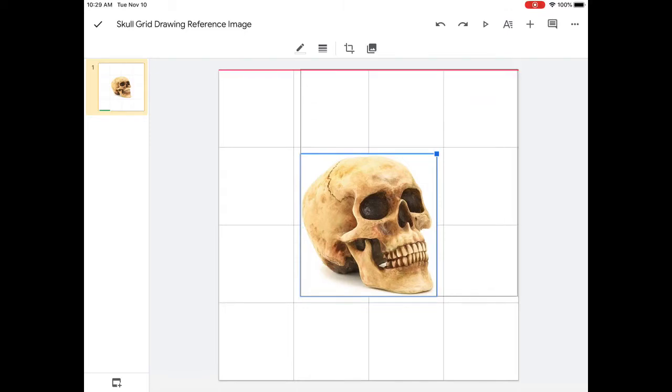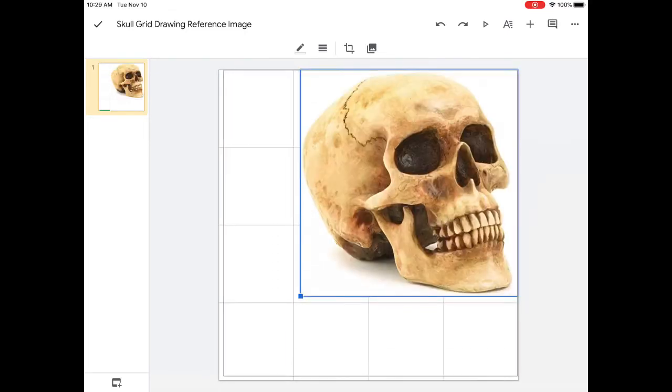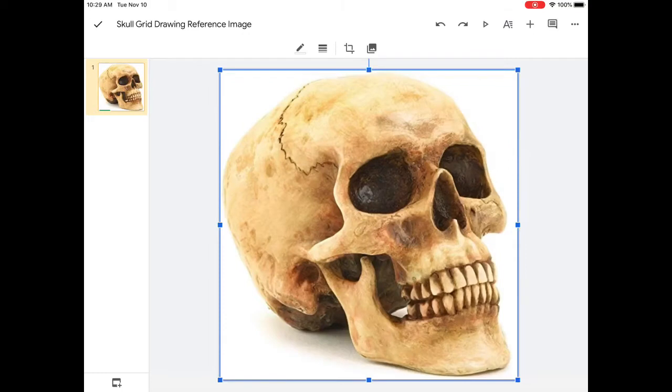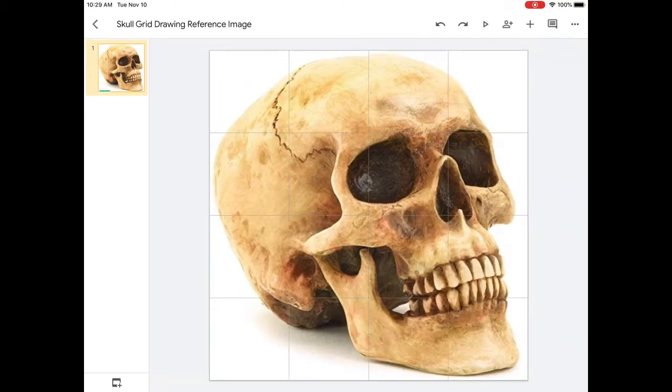I'm going to make it large so it fills the space. And then I'm going to send that to the back. So I'm going to press on it and say send to back. And do you see how my lines of my table now show up on top of my image?